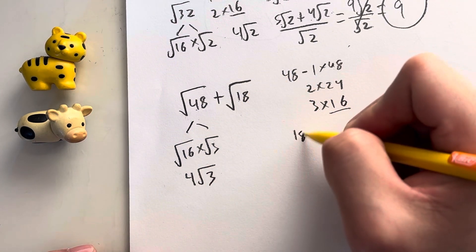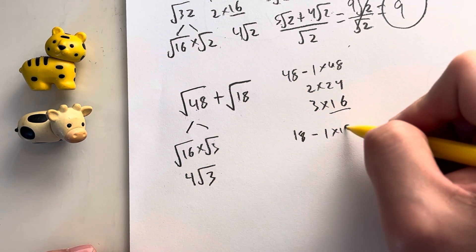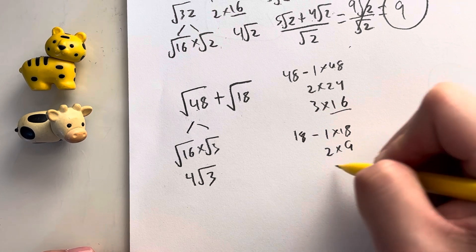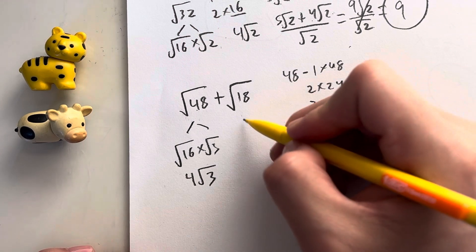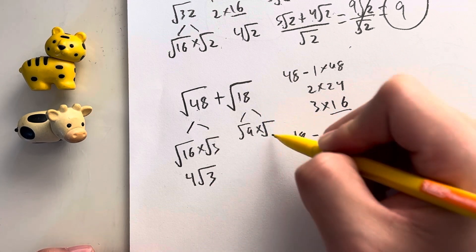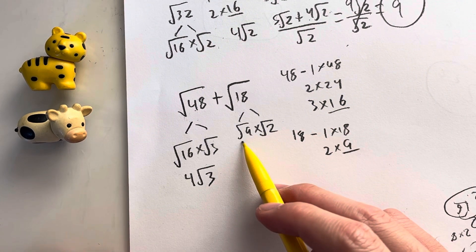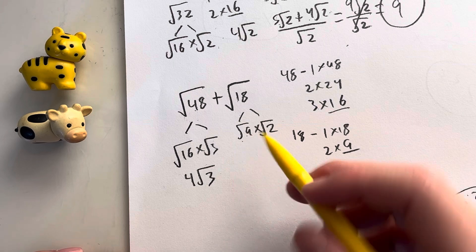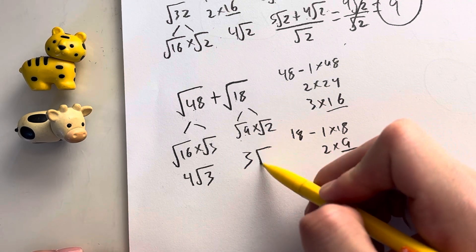How about 18? What are some factors of 18? 18 is going to be 1 times 18, 2 times 9. Oh, we can stop there because 9 is a perfect square. That's going to be the square root of 9 times the square root of 2. And then what's that going to give me? That's going to give me the square root of 9, which is 3, times root 2, which is 3 root 2.